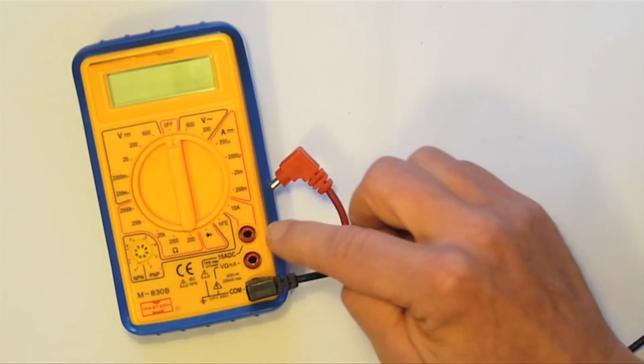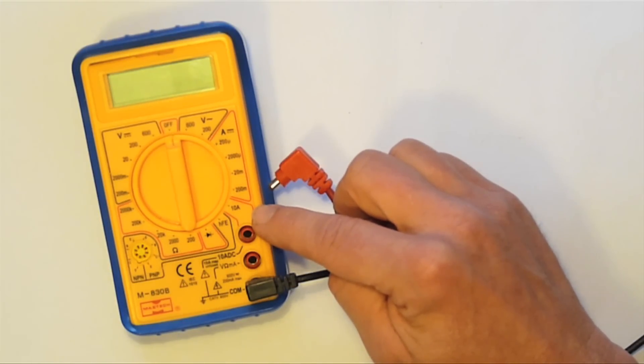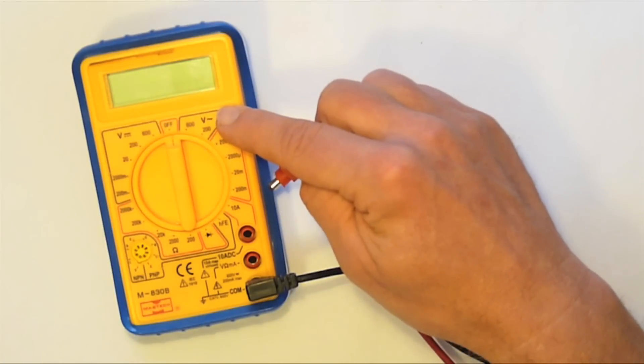With any multimeter you need to look at the labels on the other sockets to see which one is appropriate for what you're trying to measure. There's a fuse inside here and if you use the wrong socket it could blow or you could even destroy the multimeter.